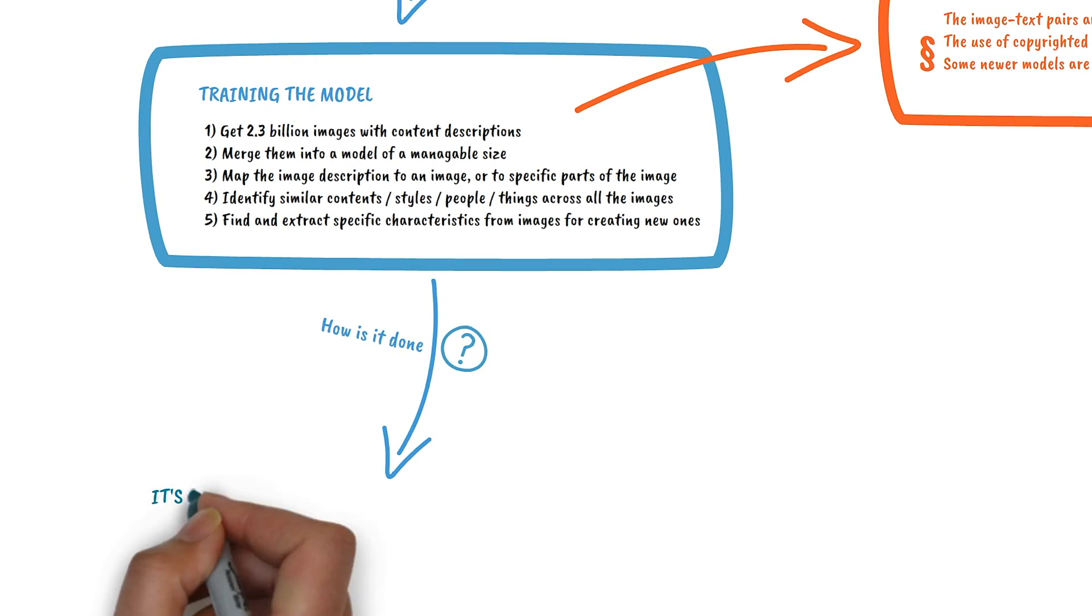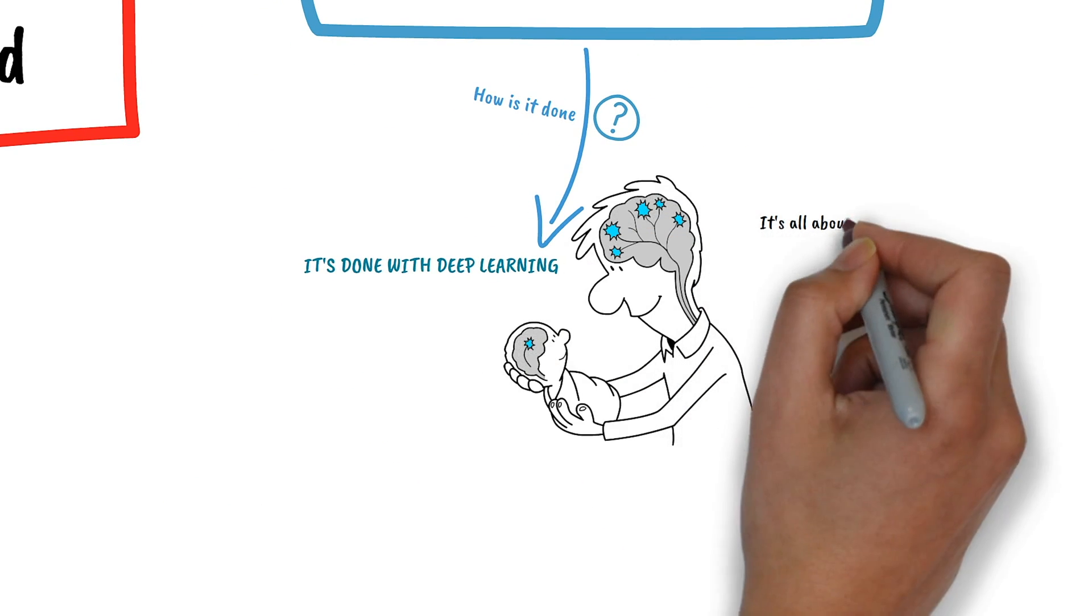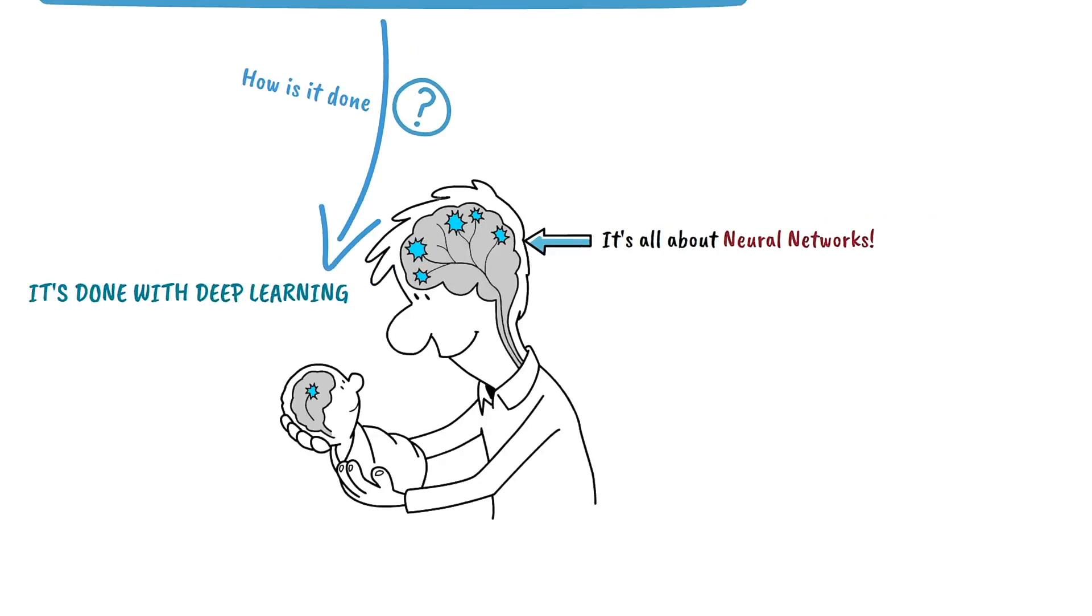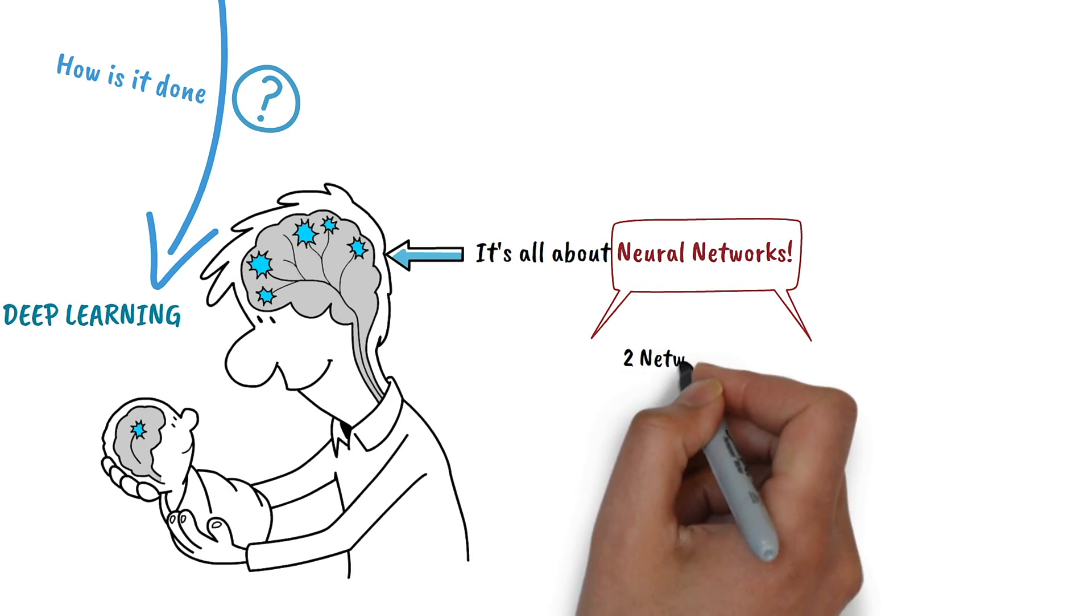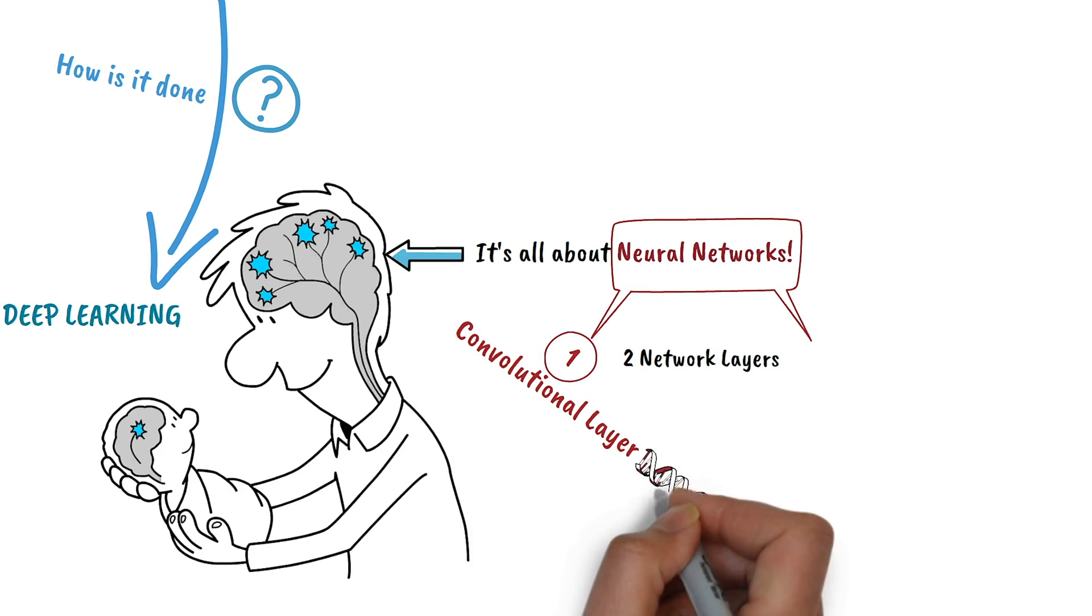It's done with a method called Deep Learning. And this is all about neural networks. For Stable Diffusion, we need two network layers. The first one is the Convolutional Layer. More about it later.